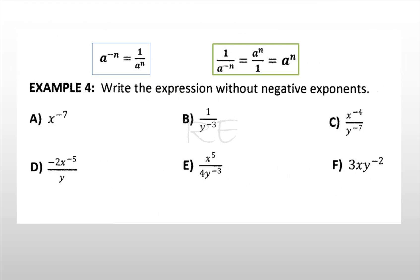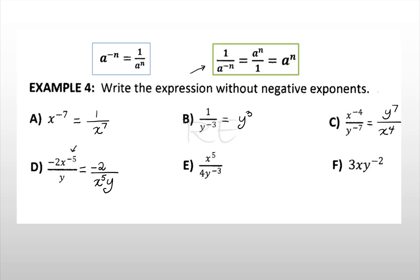We're going to write expressions without negative exponents. The negative exponent is never where it's supposed to be. If it's in the numerator, it becomes positive and we displace it to the denominator — and vice versa. For example, y to the negative 3 becomes y to the positive 3 in the denominator. x to the negative 4 becomes x to the 4th in the denominator. y to the negative 7 becomes y to the 7. If only x has a negative exponent, we keep negative 2 and x to the 5th moves to the denominator, giving negative 2 over x to the 5th times y.